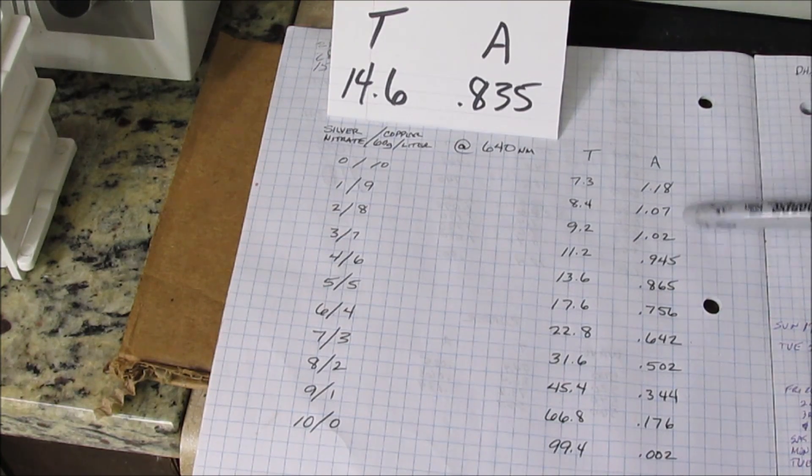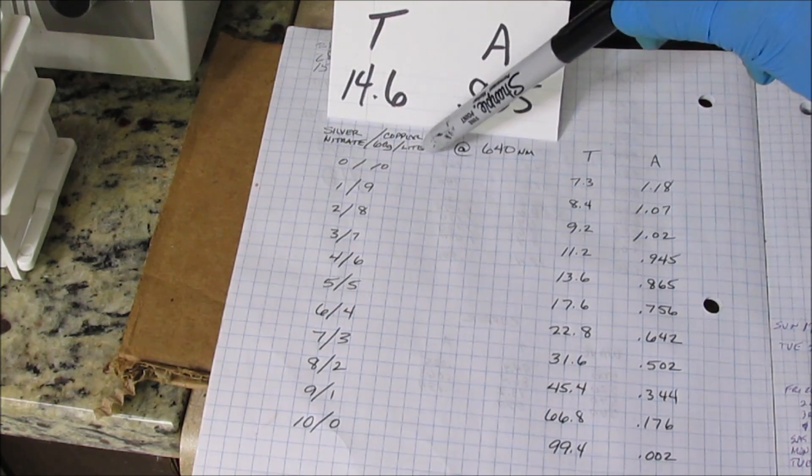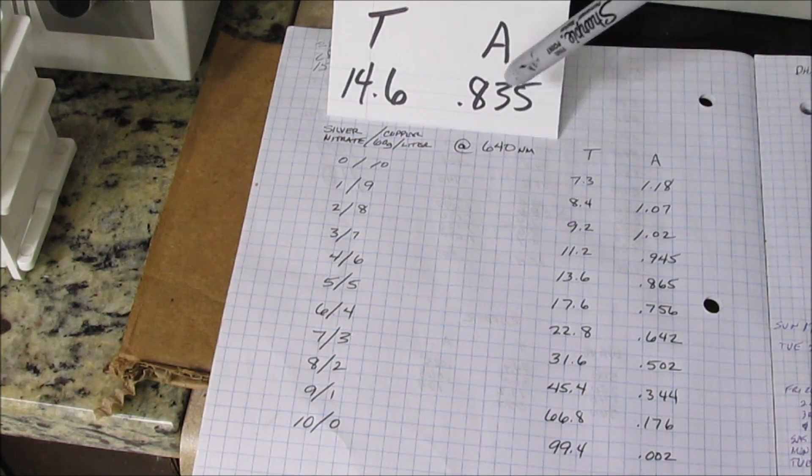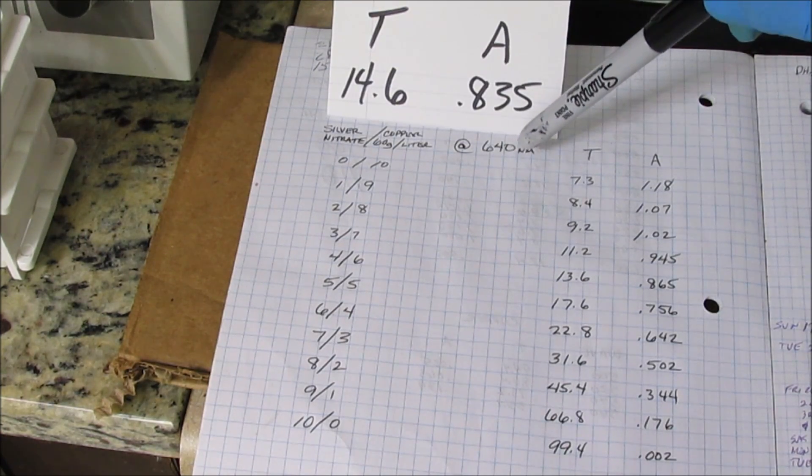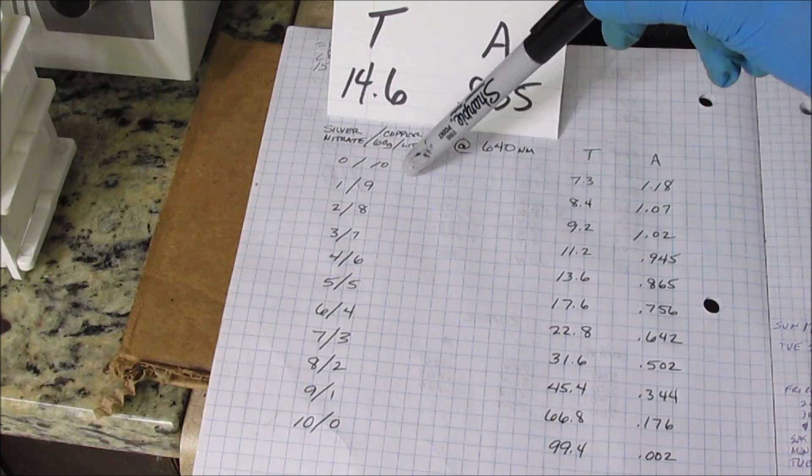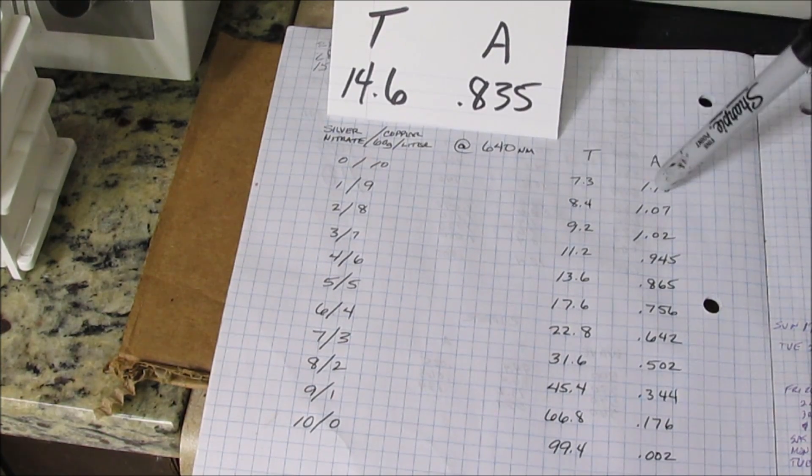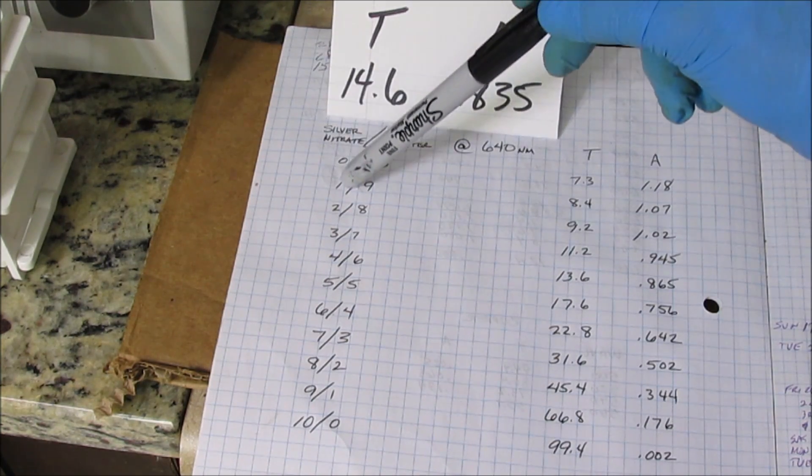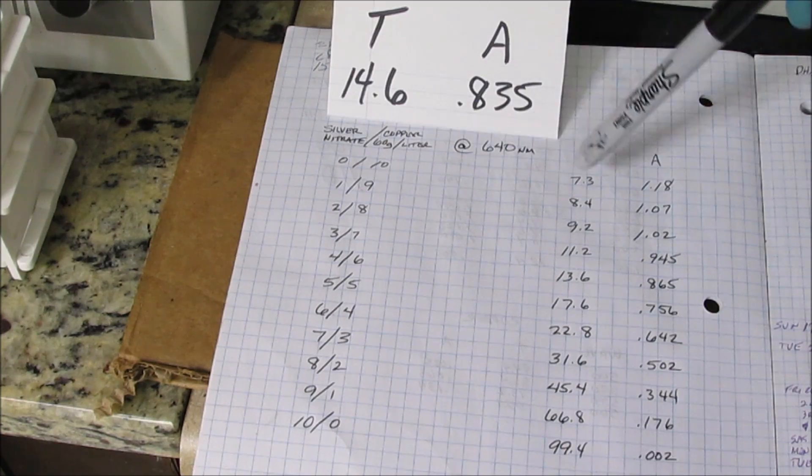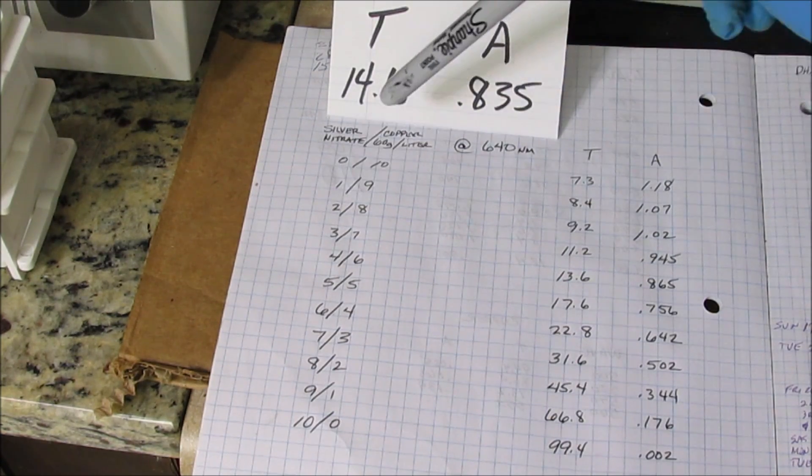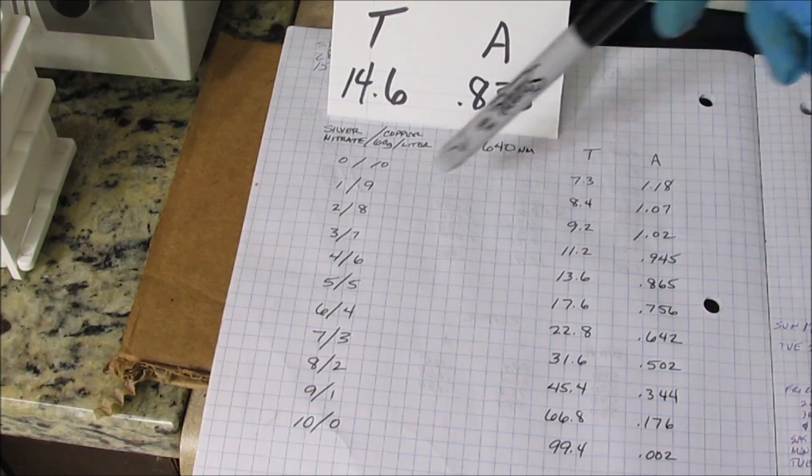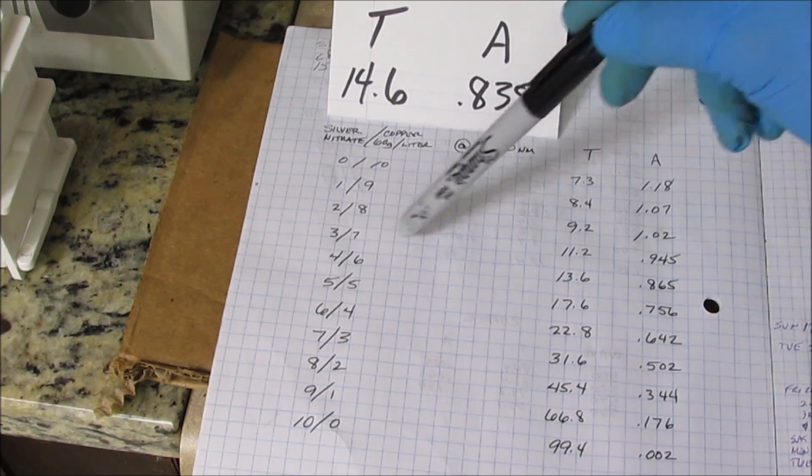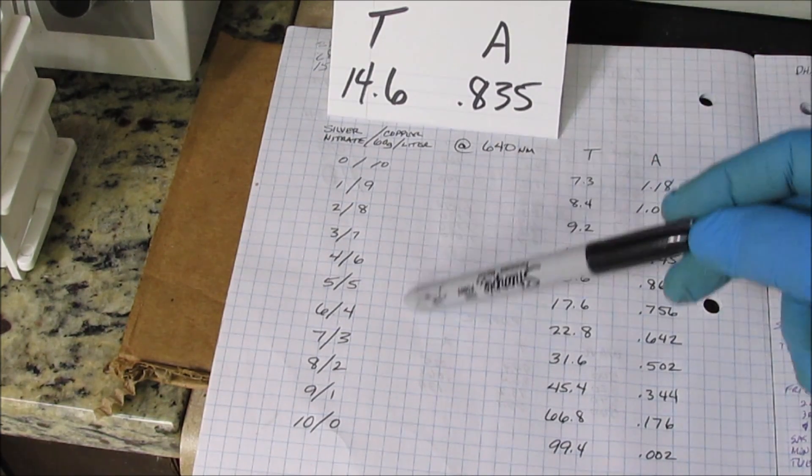Here's the chart that I prepared ahead of time using 60 grams of copper dissolved in 1 liter of solution and silver nitrate. I set the wavelength for 640, then put a sample in that was all copper and got these readings here for transmittance and absorbance. Then I put solutions in with different ratios: 1 part silver nitrate and 9 parts copper, then 2 parts silver nitrate and 8 parts copper, 3 parts silver nitrate and 7 parts copper, and so on down the line.